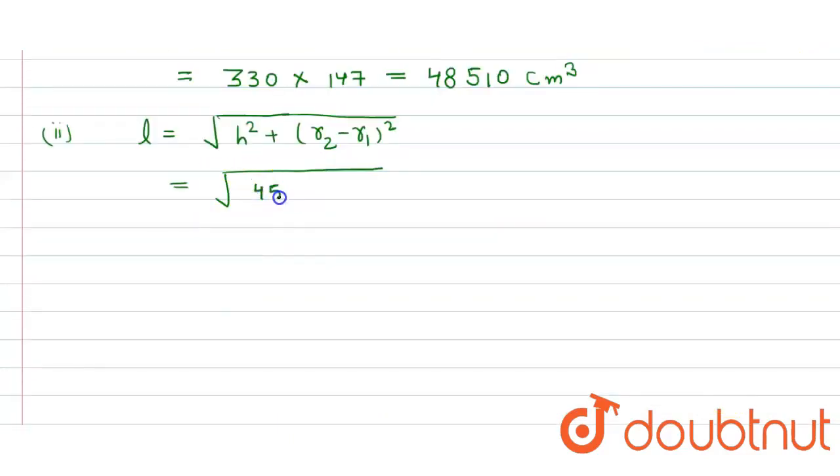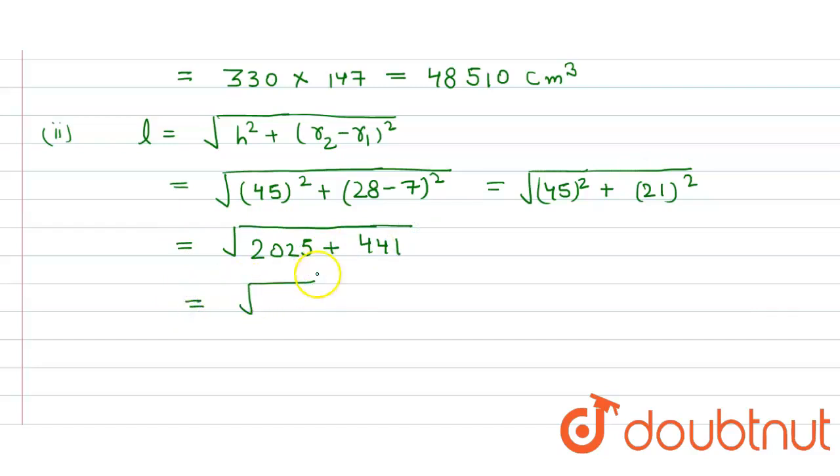And here we get √[2,025 + 441], and now it is equal to... 5 and 1 is 6, here it is again 6, and 4 and 2.